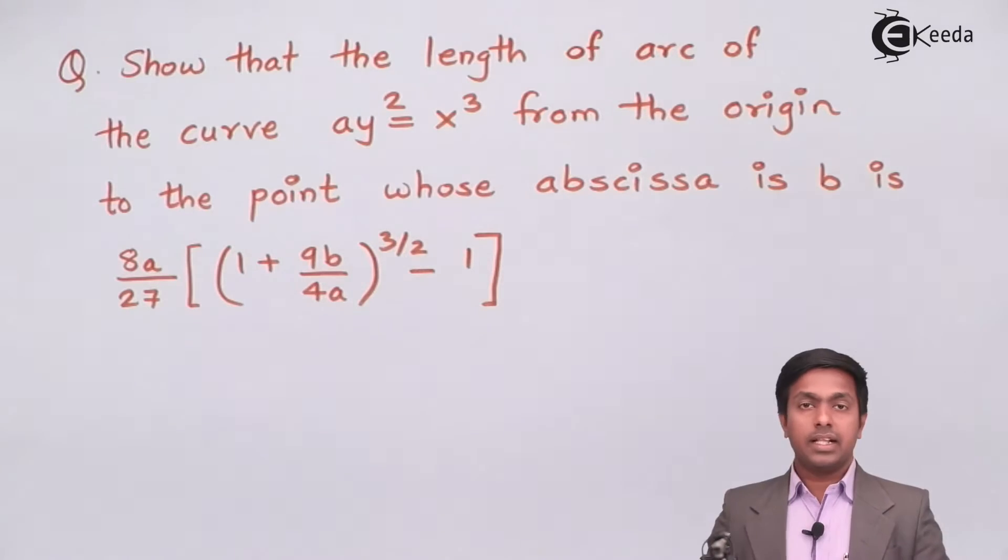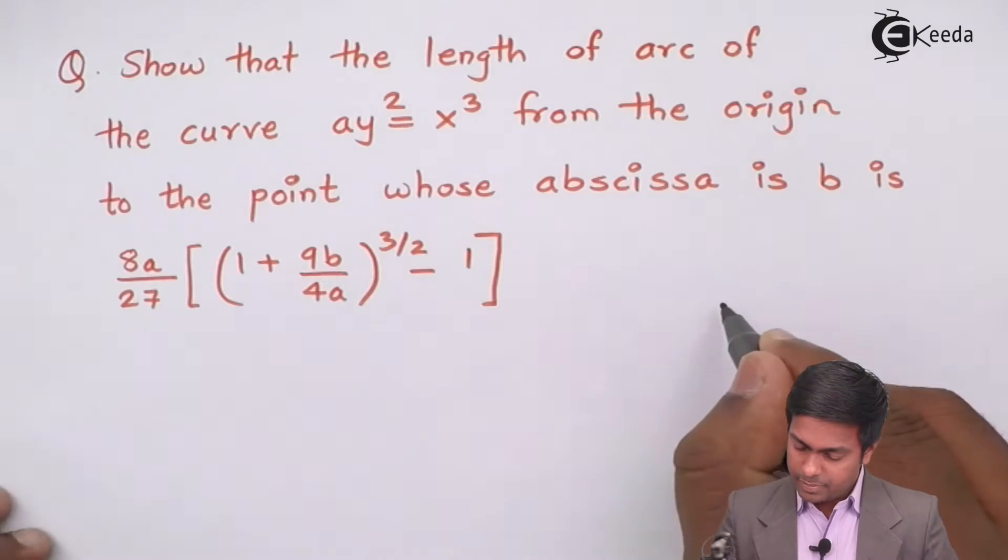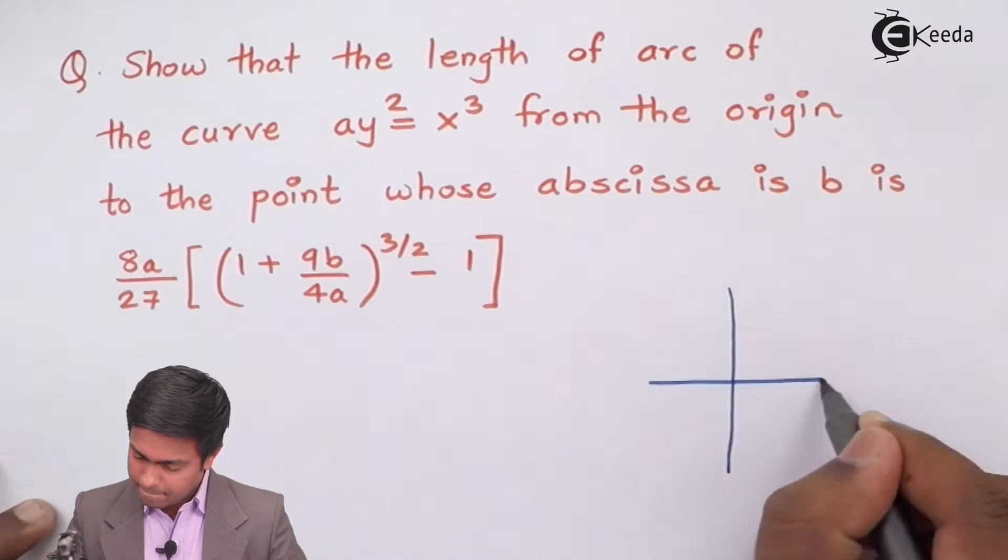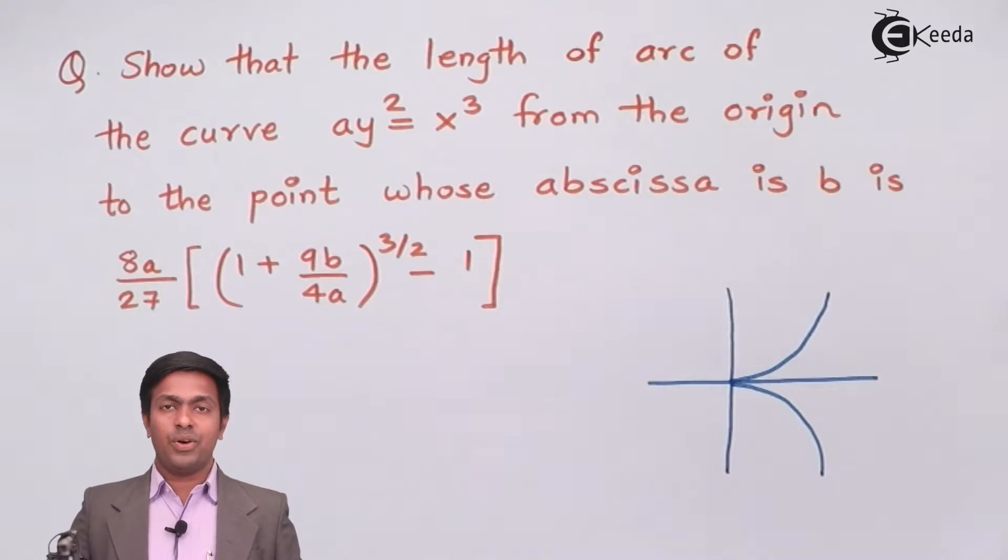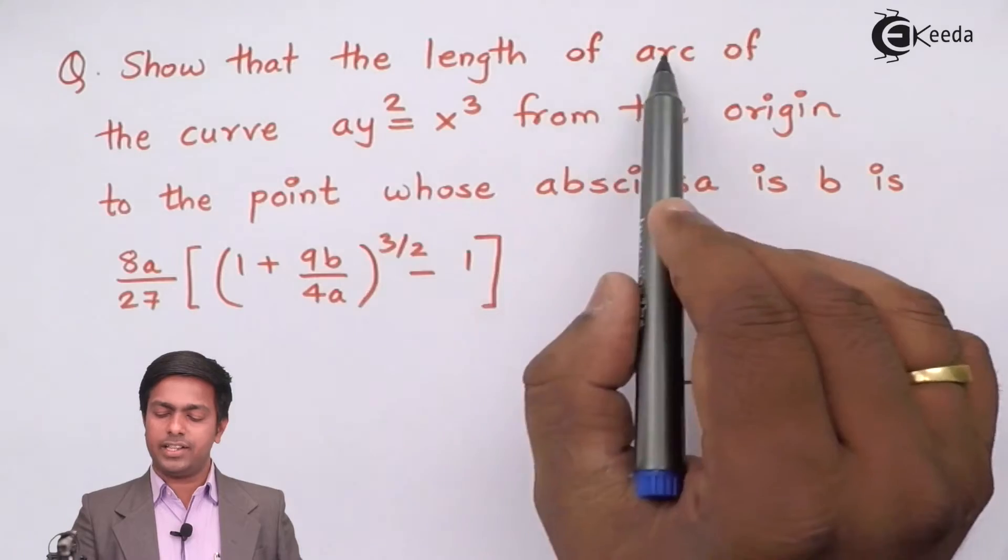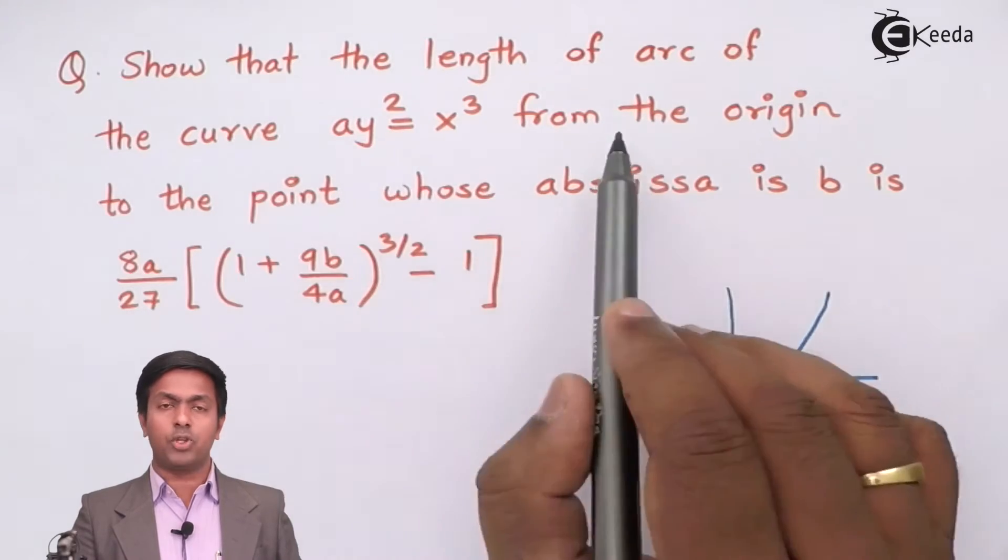So if I draw this then we'll get the shape like this. Now here I'll again read the problem. So we have to find out the length of arc of the curve from the origin.